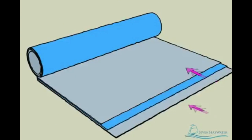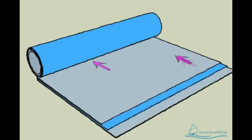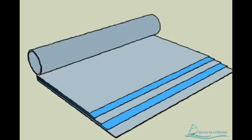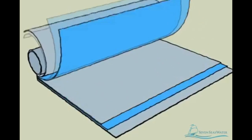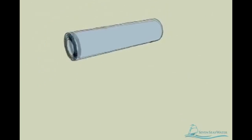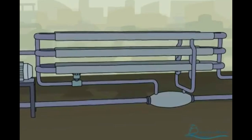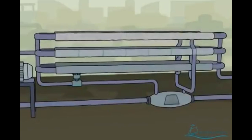The reverse osmosis membrane can be thought of as a number of sealed envelopes connected at their open ends to a tube. There are spacers between each envelope which allow water to flow across the membranes. The membrane envelopes and spacers are then wound around the tube like a roll of paper towels. The reverse osmosis membranes are then enclosed in a fiberglass shell, connected end to end — usually six to seven membranes together — and housed in vessels that are built to withstand pressures up to 1,200 psi.